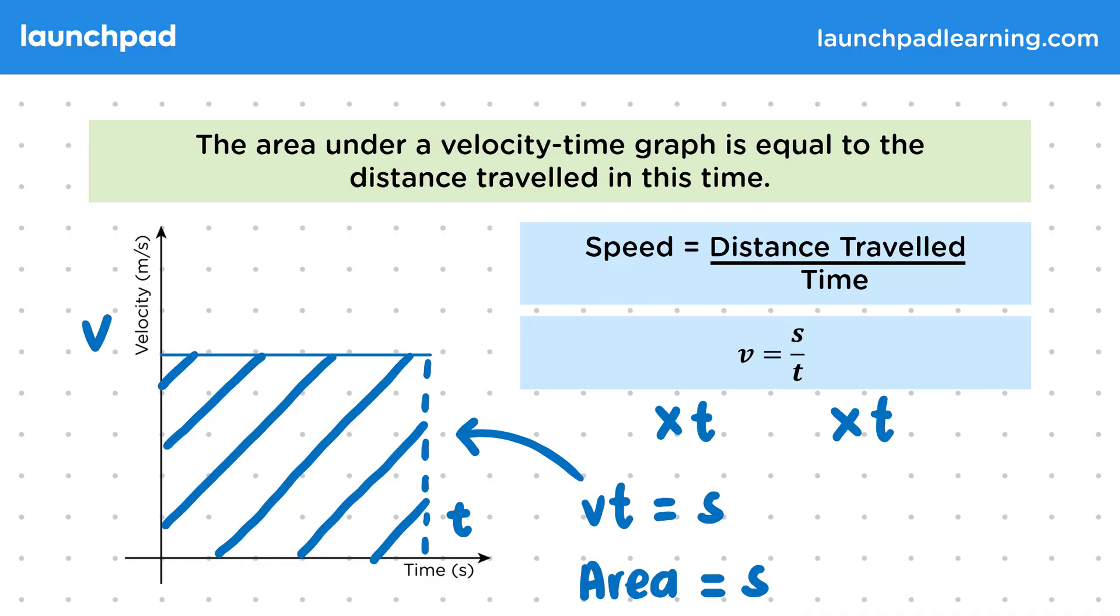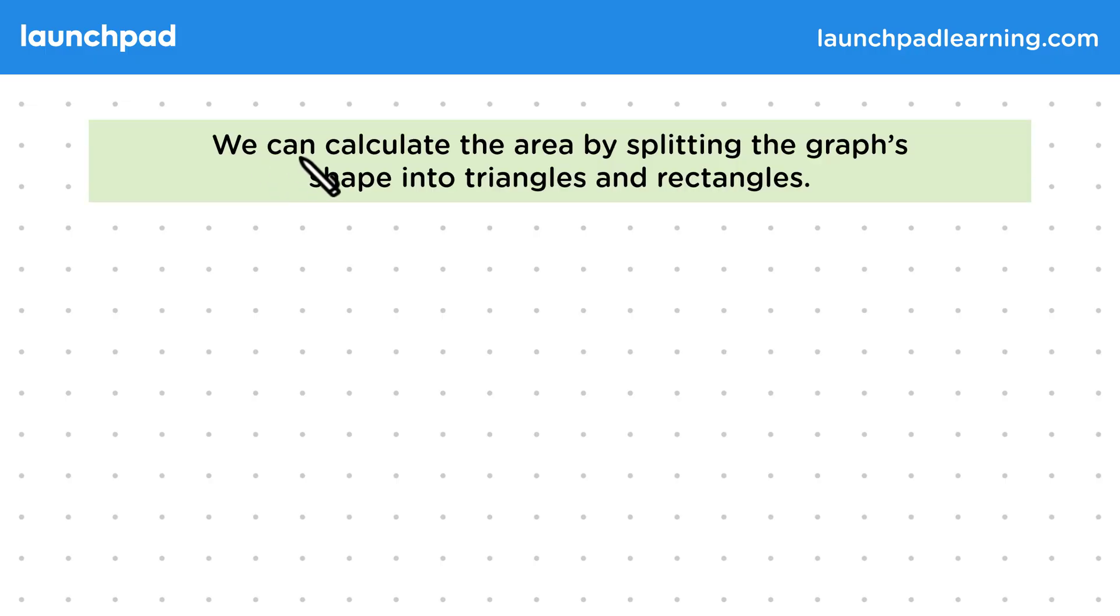So what kinds of graphs would you be expected to find areas for at GCSE? Let's have a look. Well, we can calculate the area by splitting the graph's shape into triangles and rectangles. For example, this graph here has a changing velocity. We see an acceleration at the start, then a period of constant velocity, and then a deceleration at the end.